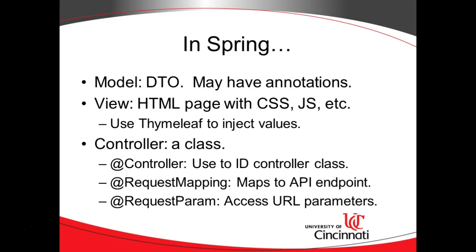Finally, we have the controller. In Spring, this is a class with several annotations. An annotation is a way to describe a class in Java. The class itself starts with an @Controller annotation above the public class line. This class may have a series of methods described with @RequestMapping, which takes a URL or endpoint and defines how that request is handled. @RequestParam goes along with request mapping — it specifies how to extract name-value pairs from the URL and make them accessible.